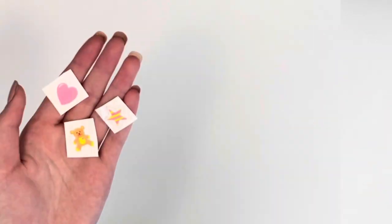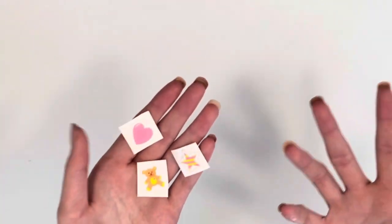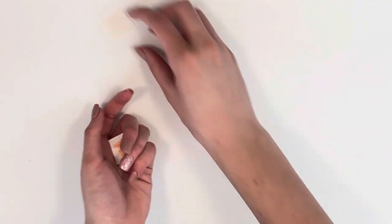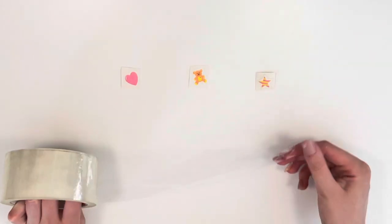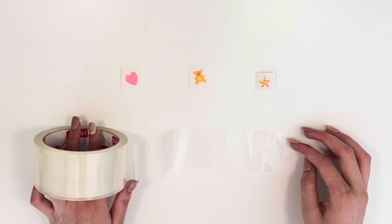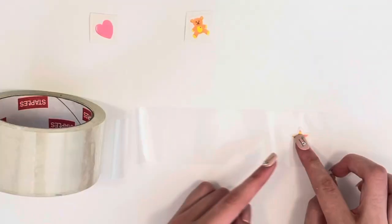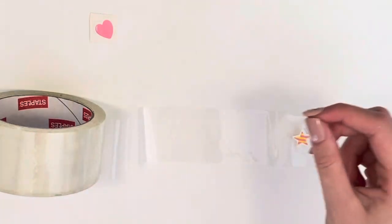Now for this, grab some small stickers or a small printed out photo. I'm taking a cute heart, a teddy bear, and a star. Then take some packaging tape, unroll it like this, and place it upside down so the sticky side is up. Now take your sticker and tape it onto the piece of tape like that, and do the same thing with the rest of your stickers or images.